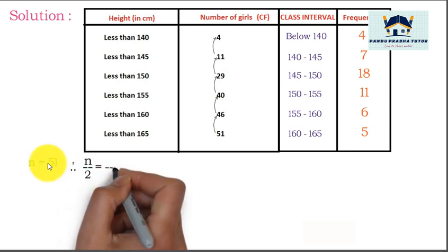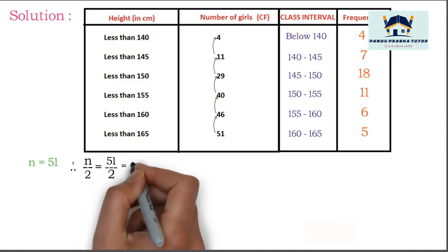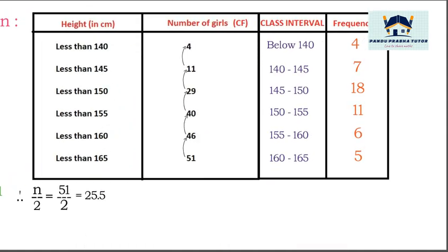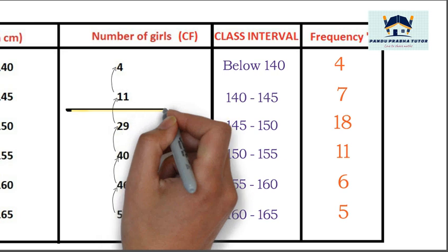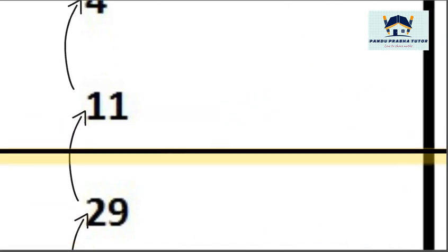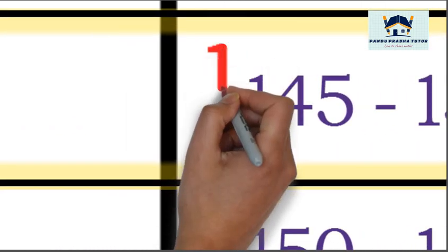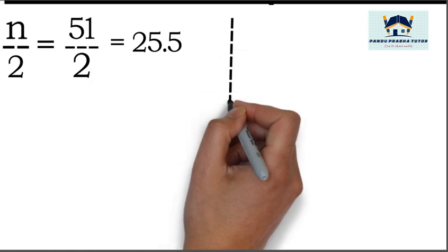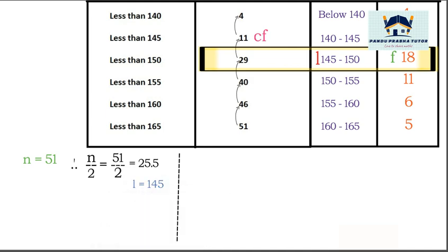Therefore, n divided by 2 is equal to 51 divided by 2, which is equal to 25.5. Now, 25.5 lies in the class interval 145 to 150, so the median class is 145–150.